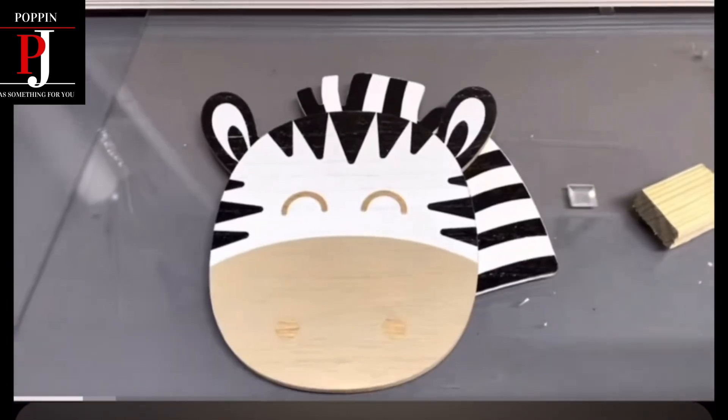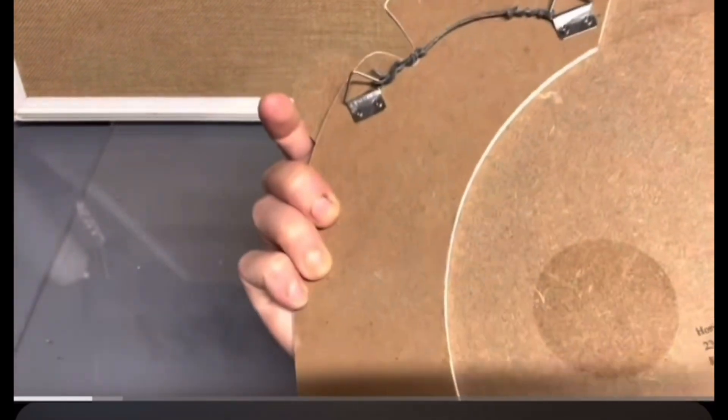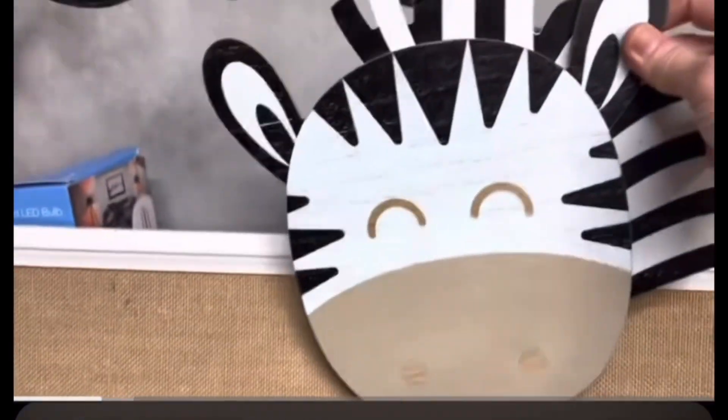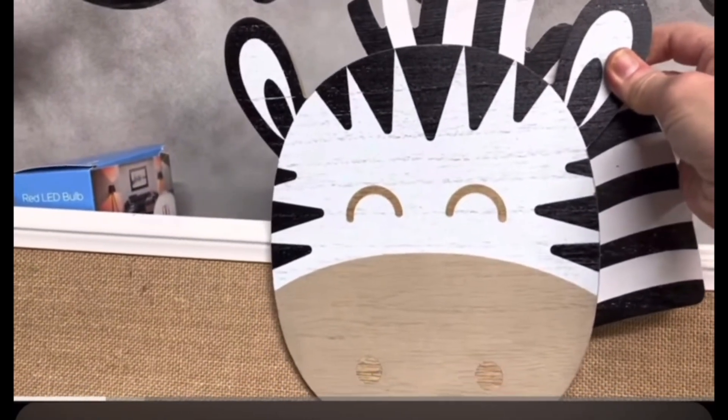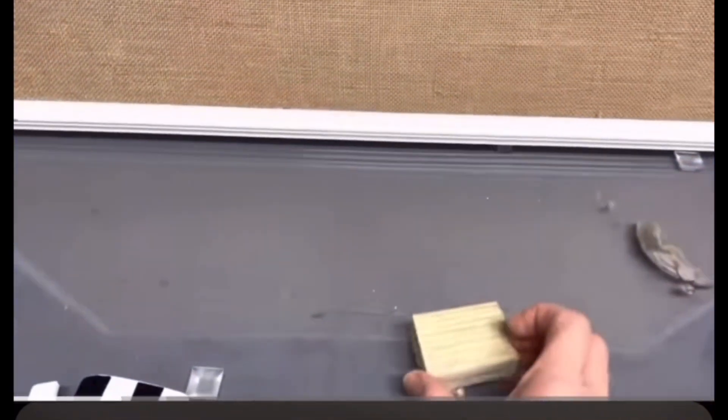I have this cute little zebra head piece, a little wooden piece that someone had used to hang up on a wall. I'm going to attach it to the bulletin board using this block of wood that I have here.